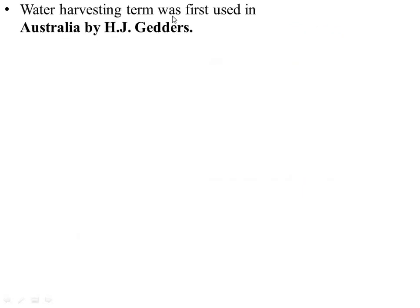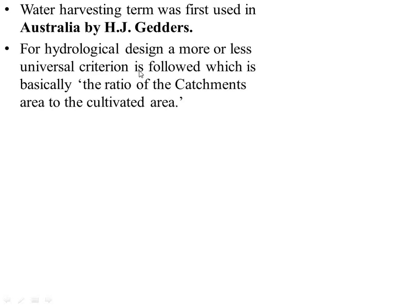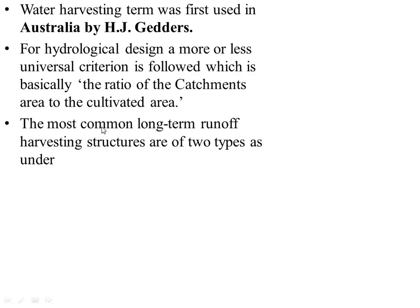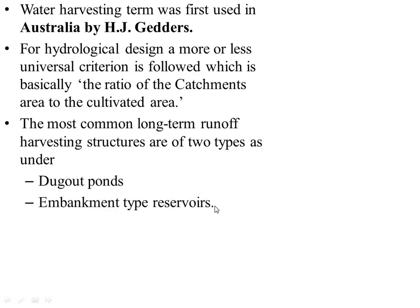Water harvesting term was first used in Australia by H.J. Gidders to denote the collection and storage of any farm water, either runoff or creek flow, for irrigation use. In many regions, local thumb rules are used for designing the structure. For hydrological design, a more or less universal criterion is followed, which is basically the ratio of the catchment area to the cultivated area. The most common long-term runoff harvesting structures are of two types: dugout ponds and embankment type reservoirs.